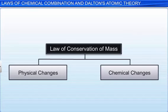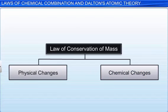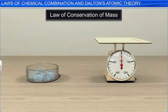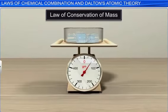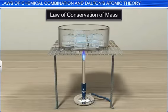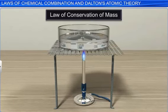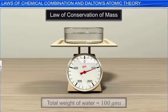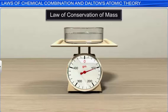The law talks about two types of changes: physical and chemical. Let's look at an experiment to verify the part about the physical changes. Let's place some ice cubes in a dish and weigh it. Let's say that the weight is x. If we heat the ice, it will melt and form water. If we weigh the water, we notice that the weight is the same as the weight of ice.